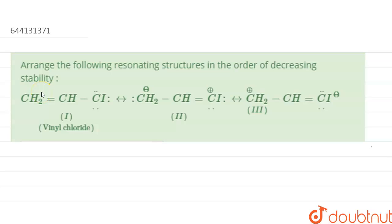The question is: arrange the following resonating structures in the order of decreasing stability.